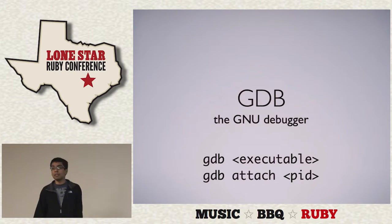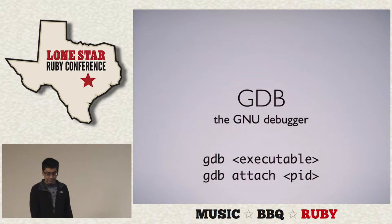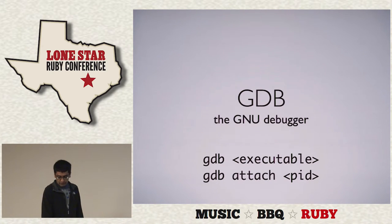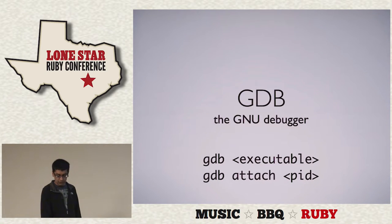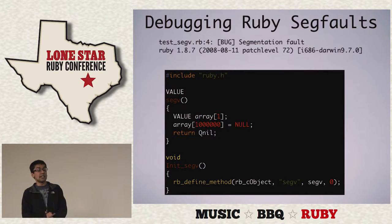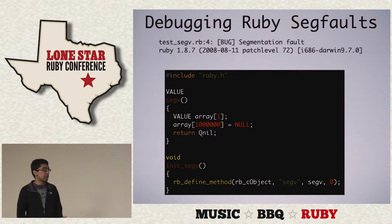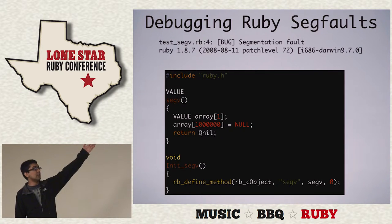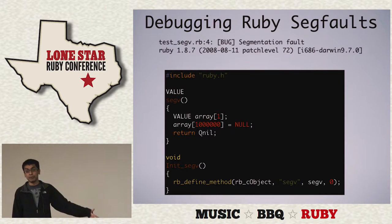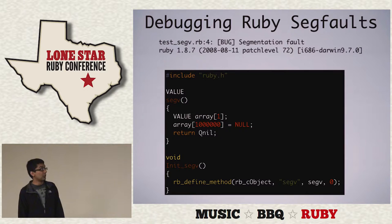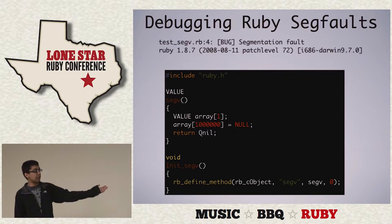GDB is the standard C debugger. Since we're all using MRI, which is written in C, and a bunch of C extensions, it's a pretty useful tool. The most useful use case is debugging segfaults. Every now and then you'll end up segfaulting with no idea what to do. Ruby just tells you 'segfault' which isn't useful — Ruby 1.9 actually shows a C-level and Ruby-level backtrace, which is far more useful. To demonstrate, I wrote a simple C extension that defines a global segv function, and a simple Ruby script that does some work before segfaulting.